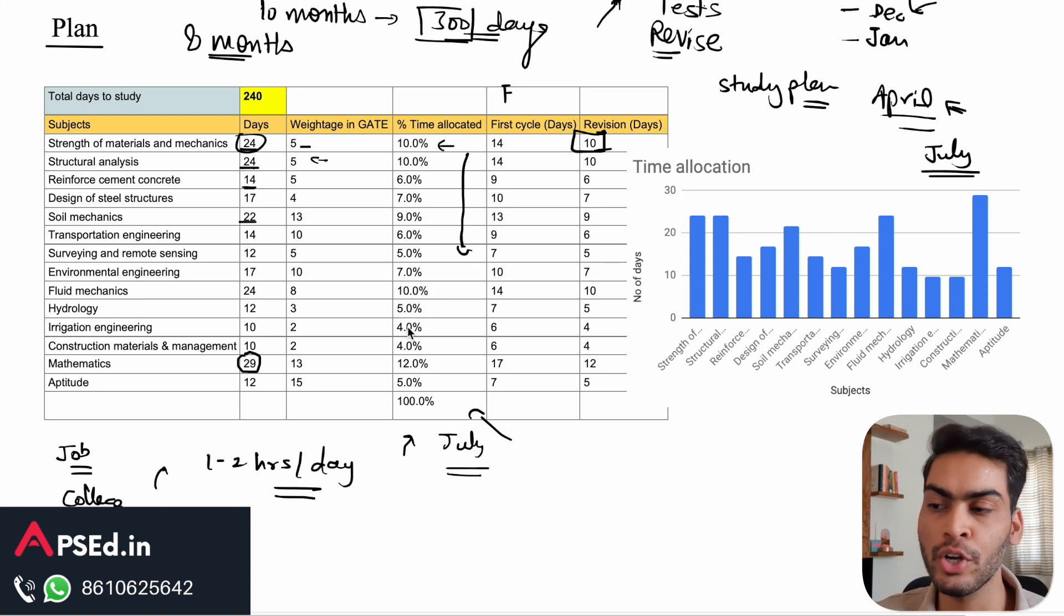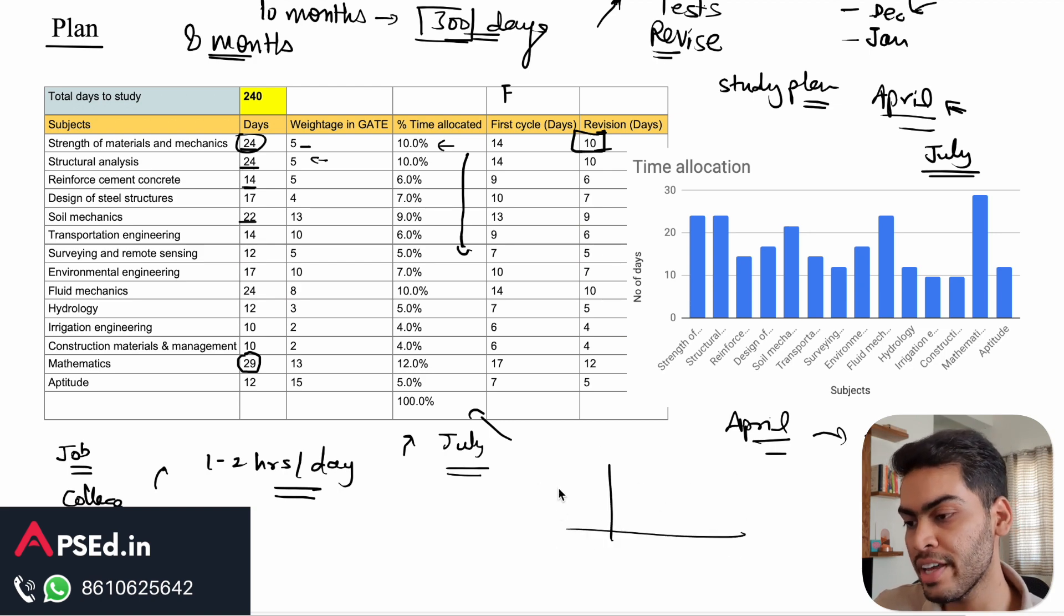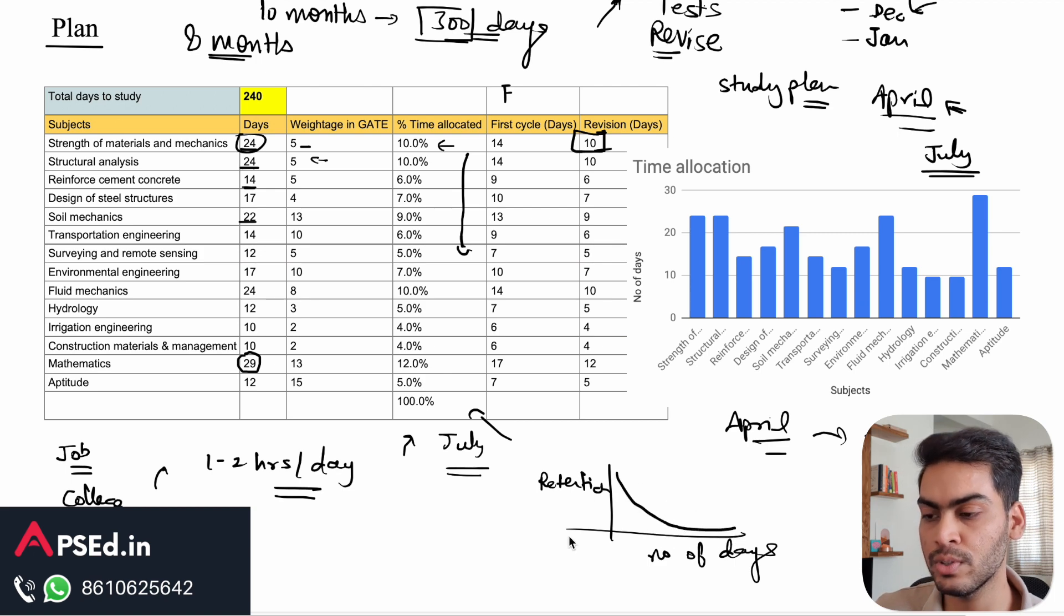I want to talk to you about the revision part. If you are studying some subject in April and if you keep it off until three or four months, you can't remember this subject. This is how our memory works. If we have retention versus number of days plotted, then the retention goes down soon after you finish studying that topic.